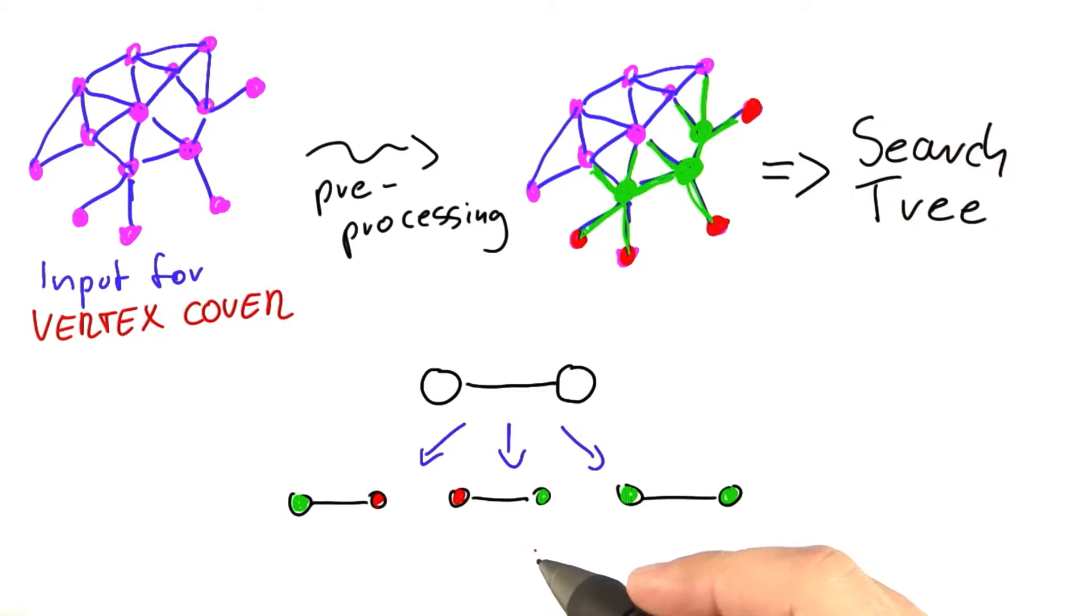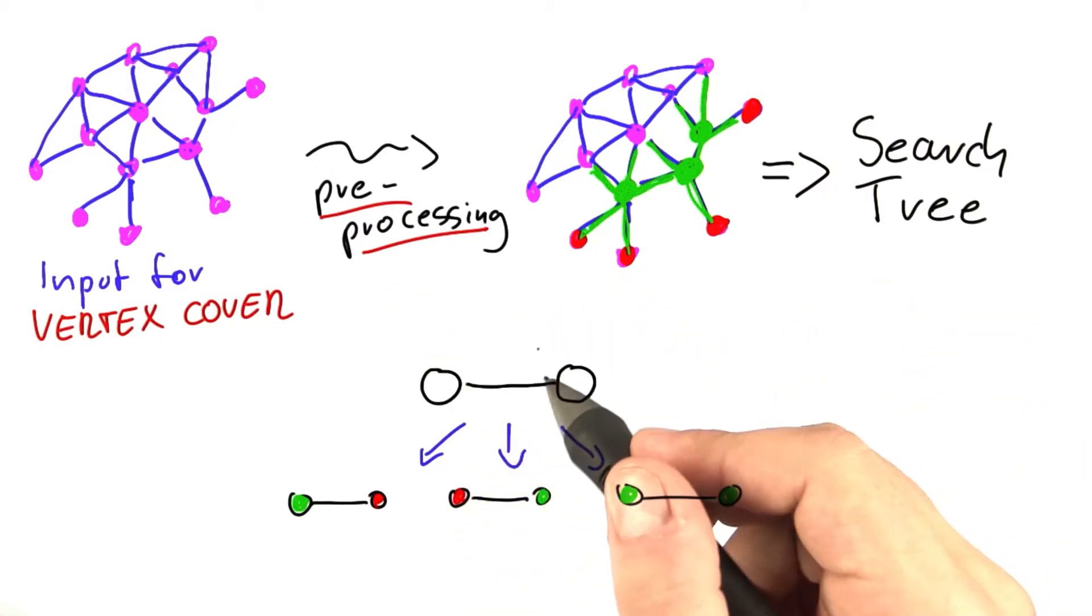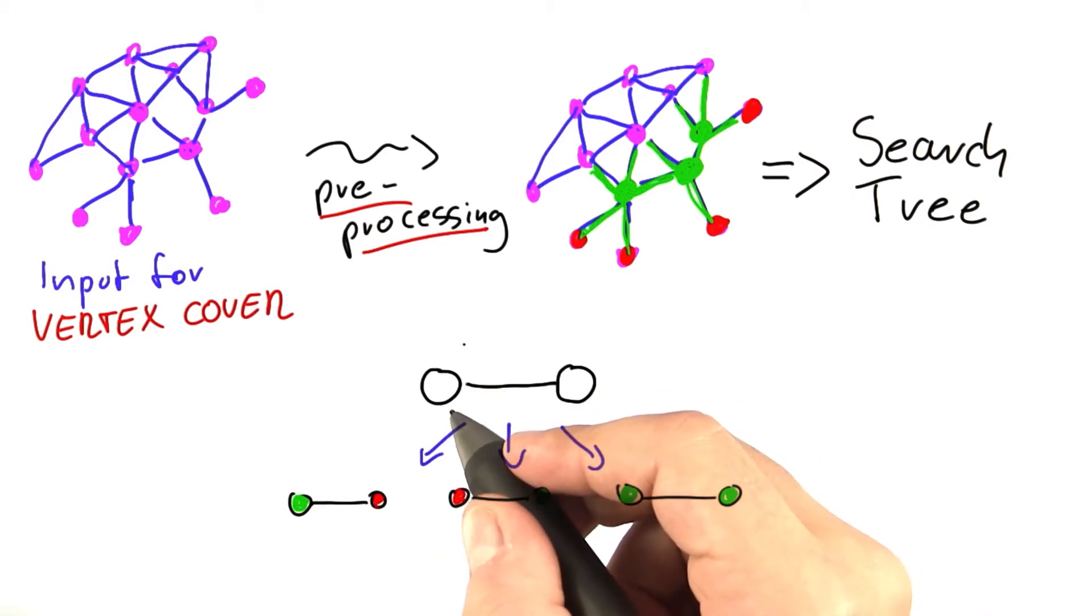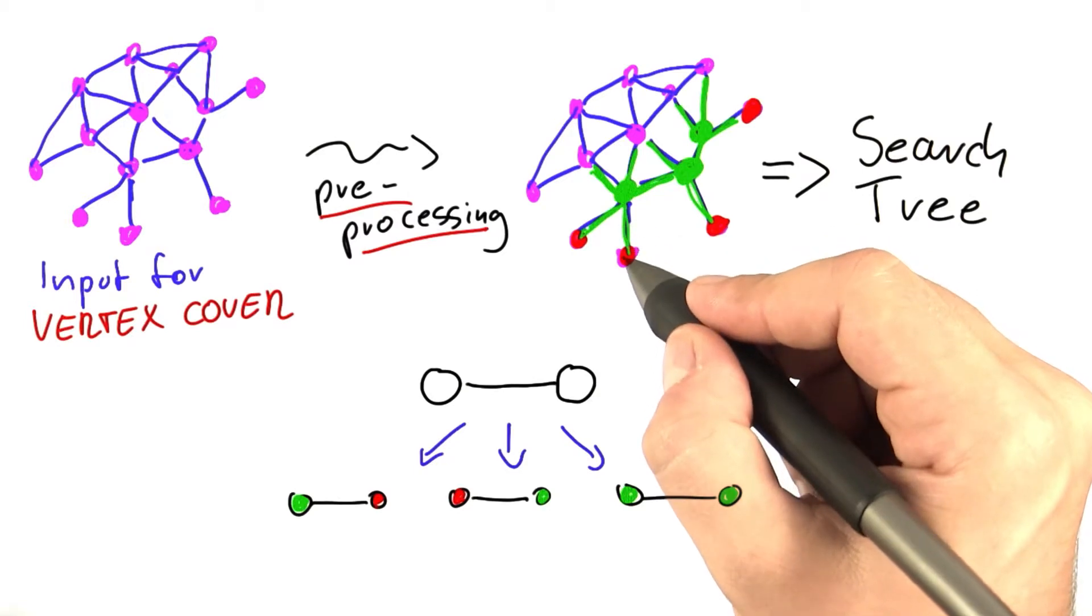And now comes the cool part. If we have applied preprocessing, then we can redesign our search tree because what this preprocessing step means basically is that we have eliminated or we have already assigned all vertices that have just a single neighbor.